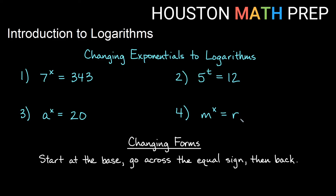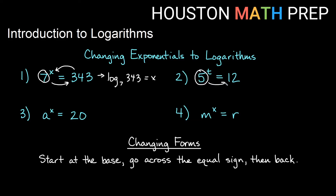Let's work out some examples changing exponentials to logarithms. This one says 7 to the x equals 343 in exponential form. Starting at the base and going across the equal sign and then back, in logarithmic form the equation will appear with 7, then 343, then x — so: log base 7 of 343 equals x. Second one: 5 to the t power equals 12. Starting at the base, going across and back — they appear as 5, then 12, then t — so: log base 5 of 12 equals t. When we have an exponential, our answer is a logarithm.